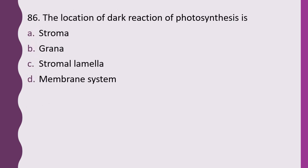Question 86. The location of the dark reaction in photosynthesis is: stroma, grana, stromal lamella, or membrane system. The correct answer is option A, stroma.